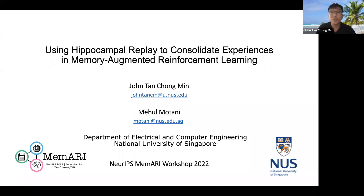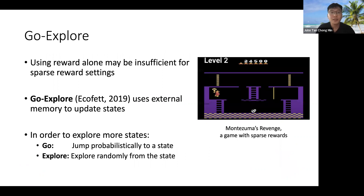Hi everyone, I'm John and I'll be sharing with you our latest research on using Hippocampal Replay for learning. Traditional reinforcement learning agents use reward as the main signal and hence do not perform well for sparse reward settings. Go Explore manages to bypass this by using external memory to update states.